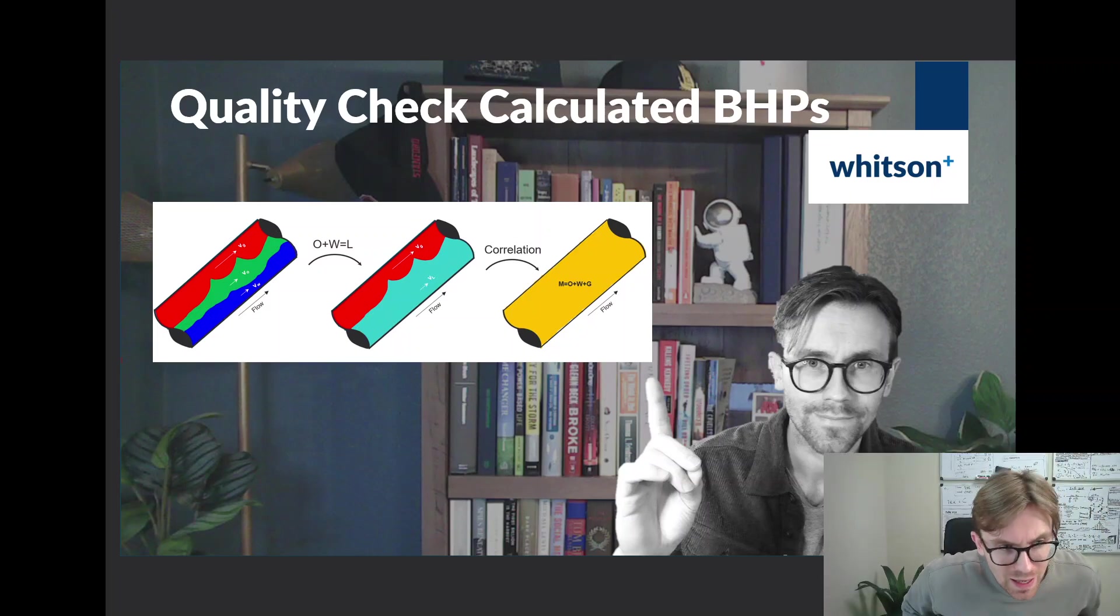So for Urtec last year, we wrote a paper where we analyzed hundreds and hundreds of wells that have gauge pressures. We compared the gauge measurements to the different correlations that we have in Wits and Paws. The biggest learning from that exercise was that the biggest uncertainty is not what correlation you pick. The biggest uncertainty is the input data. As engineers, we need to develop a framework so that we can assess whether the input data makes sense or not. Those frameworks are typically graphical, and I'm going to go through them here today.